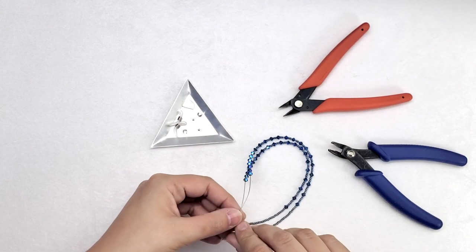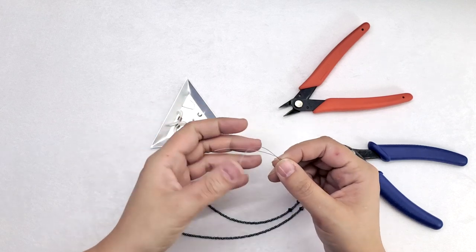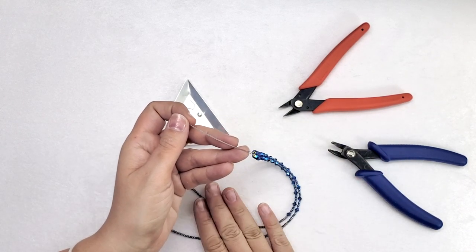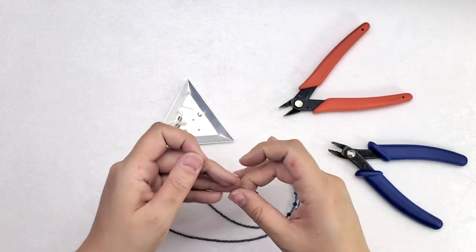We're going to need 30 inches of .014 fine diameter Soft Flex beading wire. Now I do have some beads already strung up on it and I will go over those in just a minute as far as what I strung up and where.